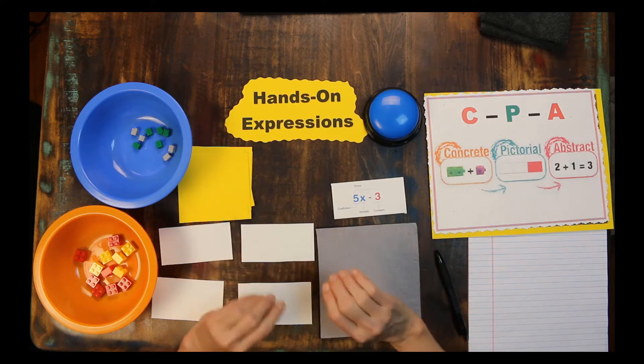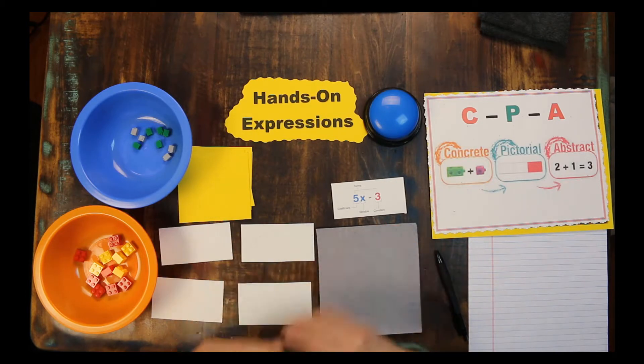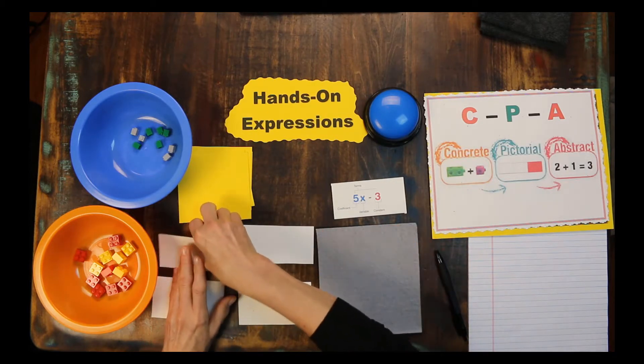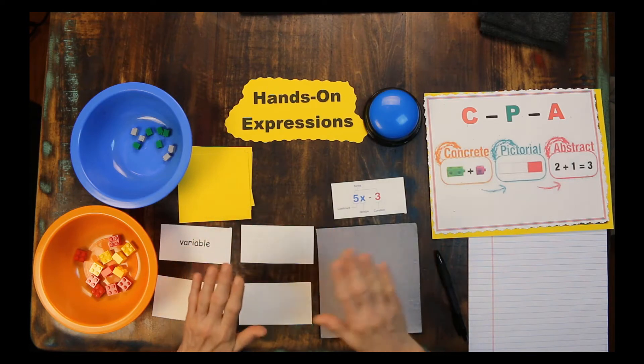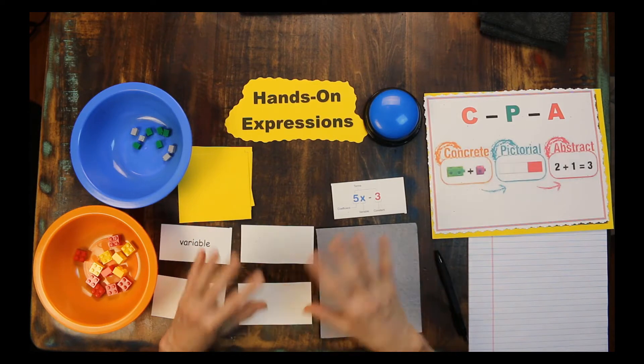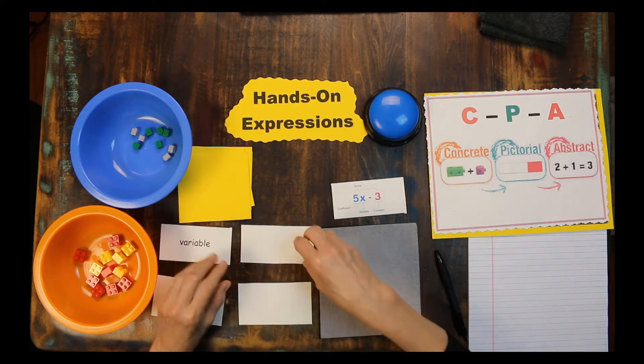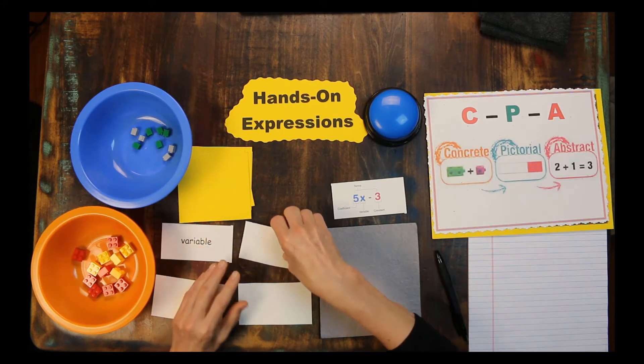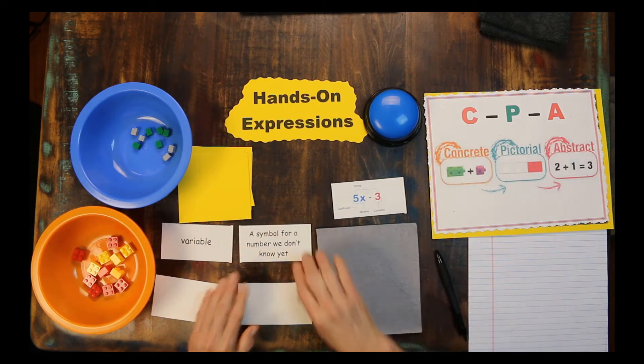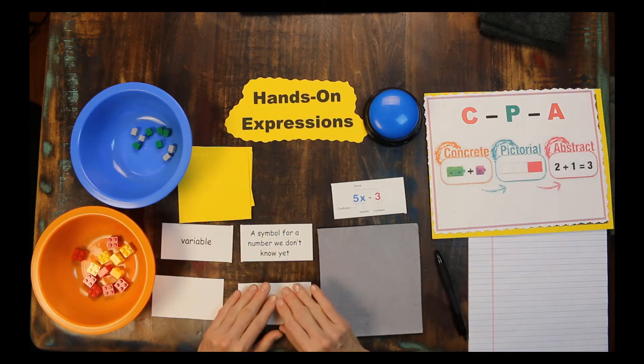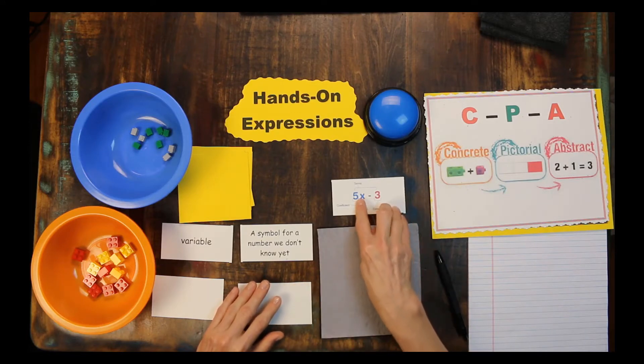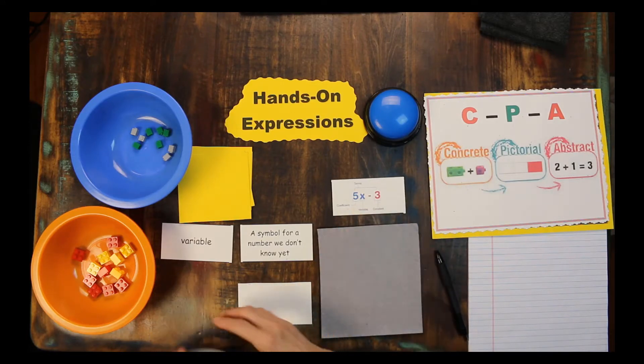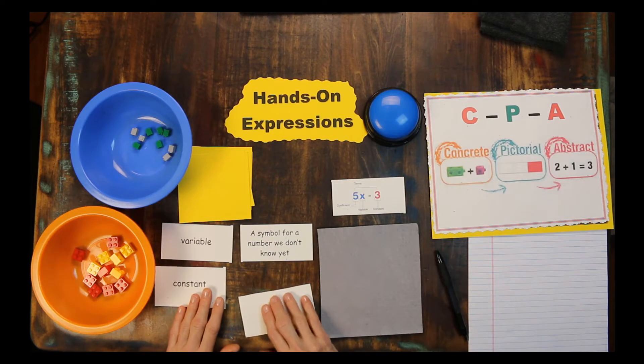Before we begin to play hands-on expressions, there are a few terms I'd like us to review. All these resources are contained at glennataber.com in the packet for math games with Legos. The first is variable: a variable is a symbol for a number we don't know yet. A constant is a term in an algebraic expression that contains only numbers.